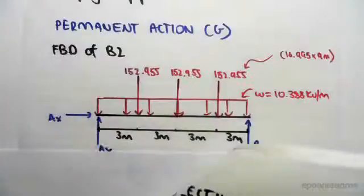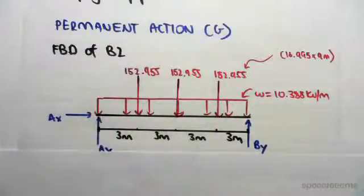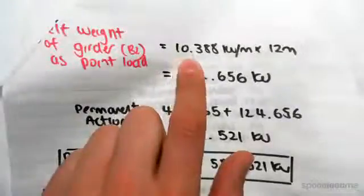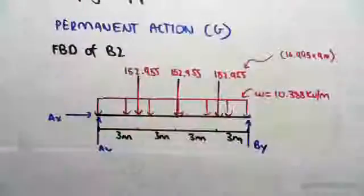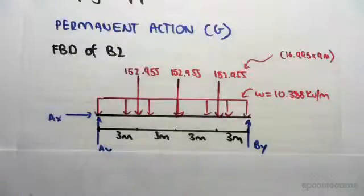The self-weight of the actual girder, this UDL, we also saw in the previous video. We saw that the self-weight of the girder was 10.388 kilonewtons per meter. So we just have to include that as the self-weight.